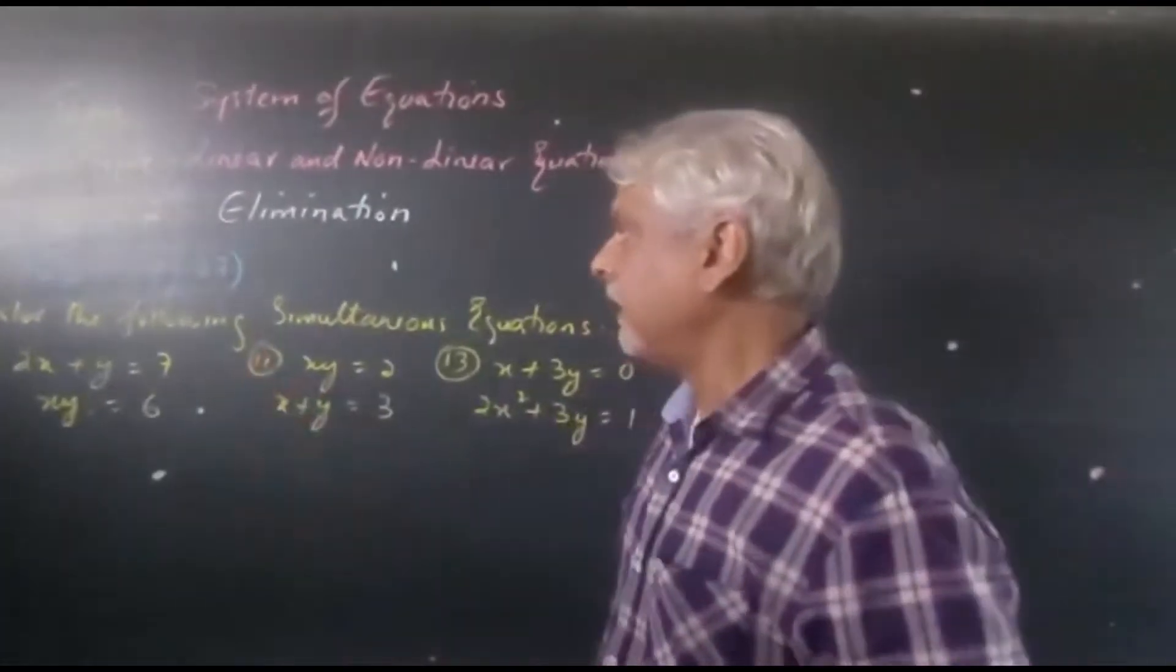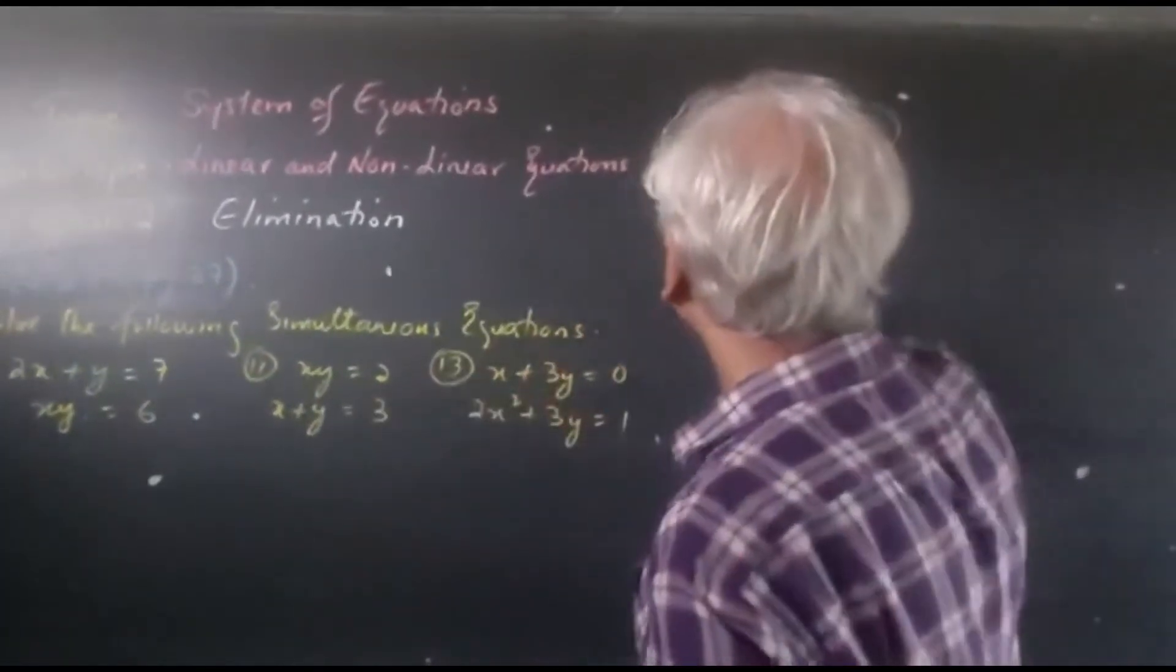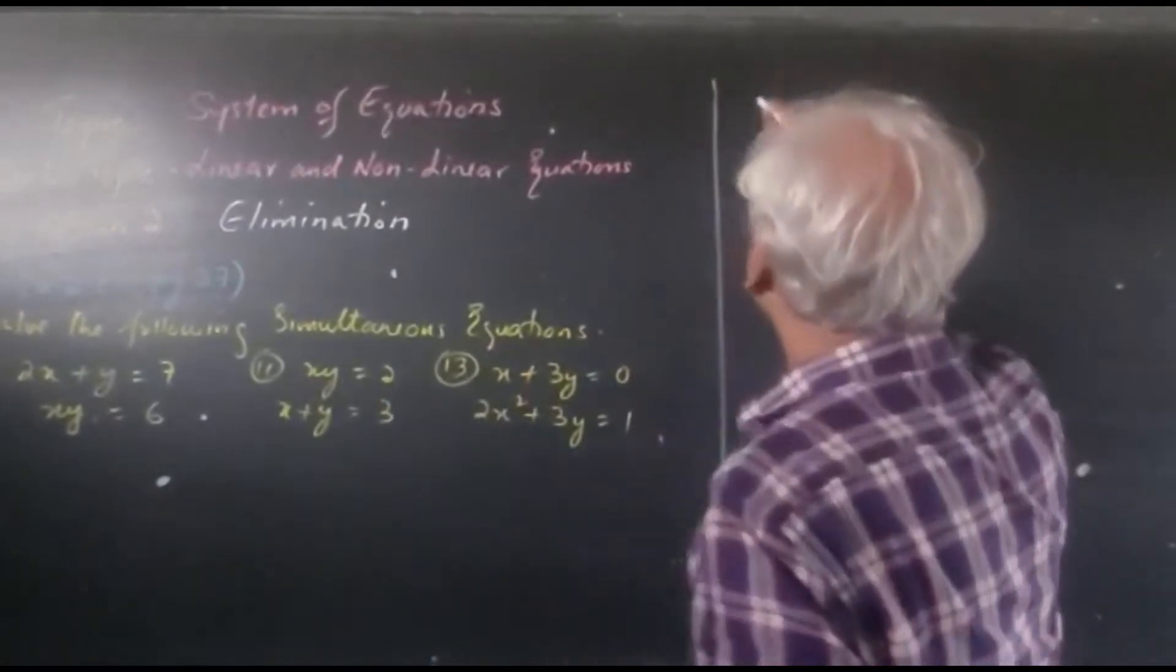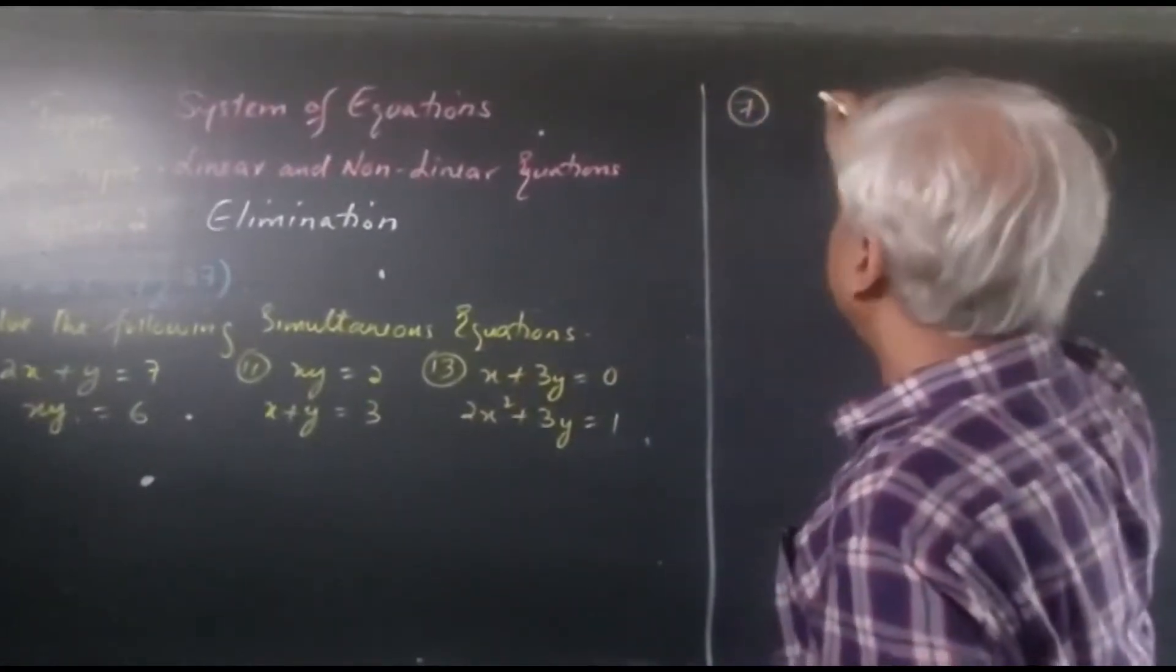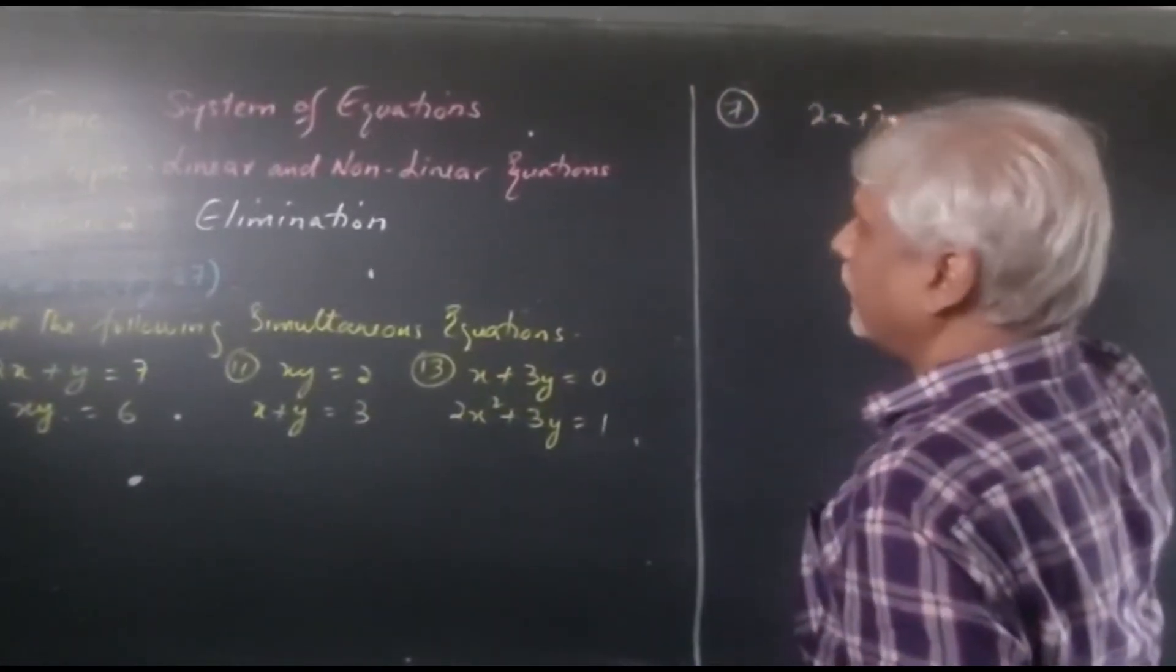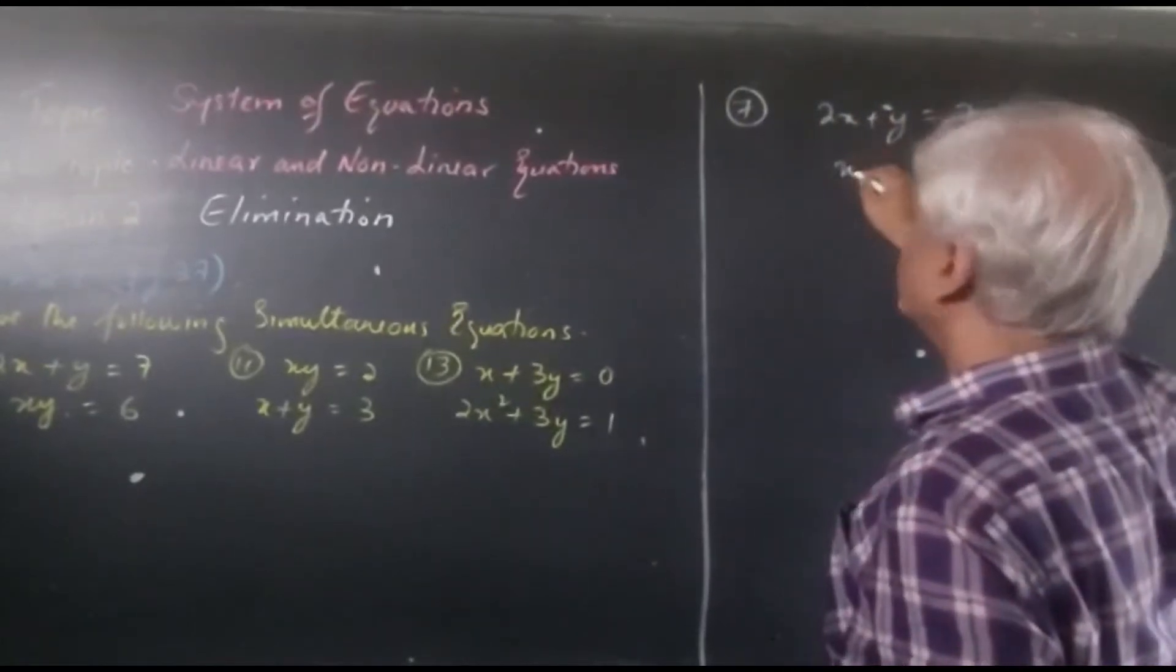So let's start with question number 7. We have 2x plus y equals 7 and xy equals 6.